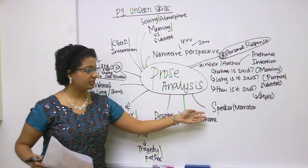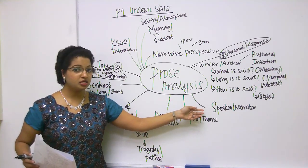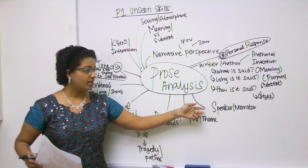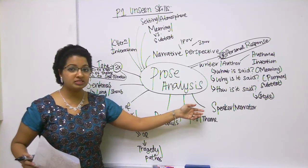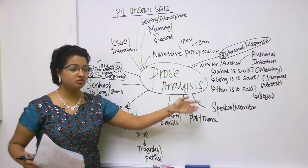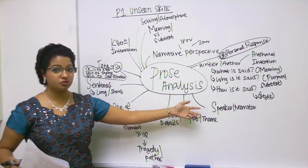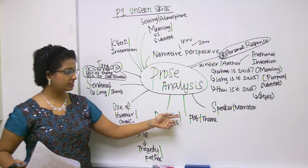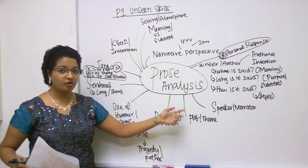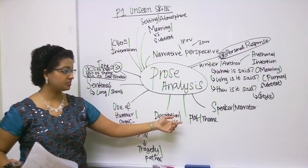Now let's look at the speaker or the narrator. In a poem, you have a speaker — the imaginary person reciting the poem to you. In a prose passage, we have the narrator, the person telling you the story. Then look at his or her motivations. And then let's look at the plot and the theme, which is basically the story — the summary of the story, the plot synopsis.